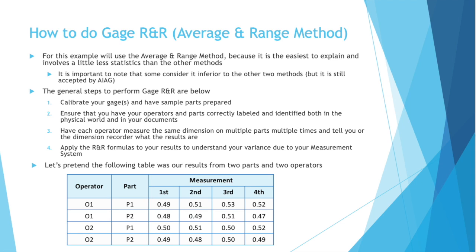Step 1. Calibrate your gauge or gauges and have sample parts prepared. Step 2. Ensure that you have your operators and parts correctly labeled and identified both in the physical world and in your documents, where you will be recording the actual measurements. Step 3. Have each operator measure the same dimension on multiple parts multiple times and tell you or the dimension recorder what the results are so they can be written down. Step 4. Apply the R&R formulas to your results to understand your variance due to your measurement system.